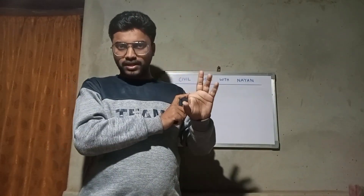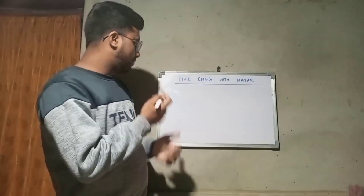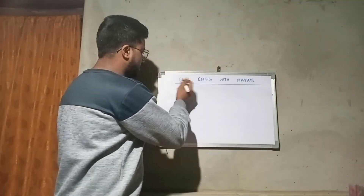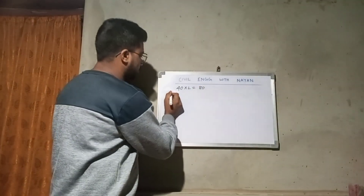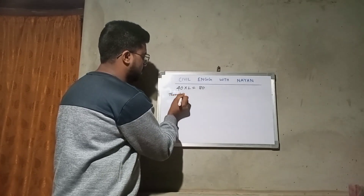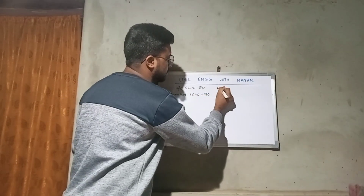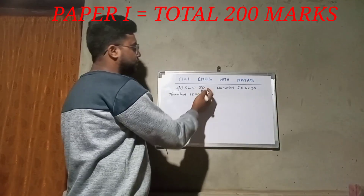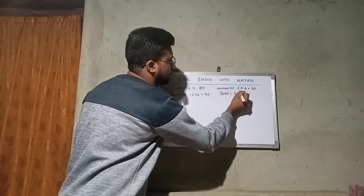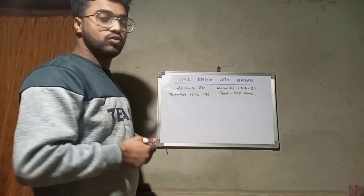The subjects of paper 1 are: 1. Building Materials, 2. Solid Mechanics, 3. Design of Steel Structure, 4. Design of Concrete and Masonry Structures, 5. Construction Practices, Planning and Management. For the question pattern, MCQ is 10 marks — so 80 marks total. Theoretical questions are 15 marks times 6, giving 90 marks. Numerical questions are 5 marks times 6, giving 30 marks. The total is 200 marks. Paper 1 follows this same pattern.